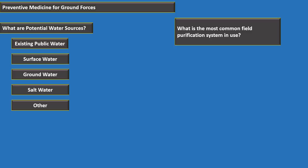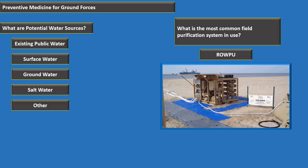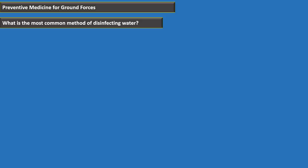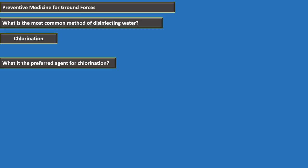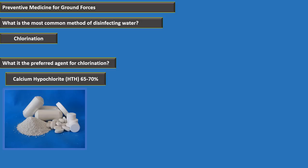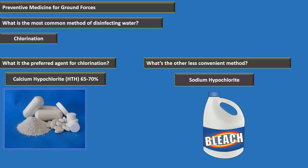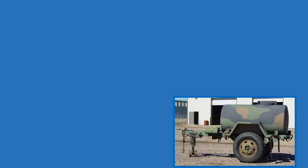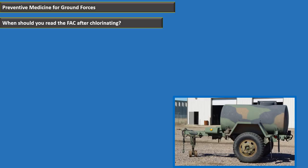The preferred agent for chlorination is calcium hypochlorite (HTH 65-70%). The less convenient alternative is sodium hypochlorite (bleach). After adding chlorine, wait at least 30 minutes before reading free available chlorine.